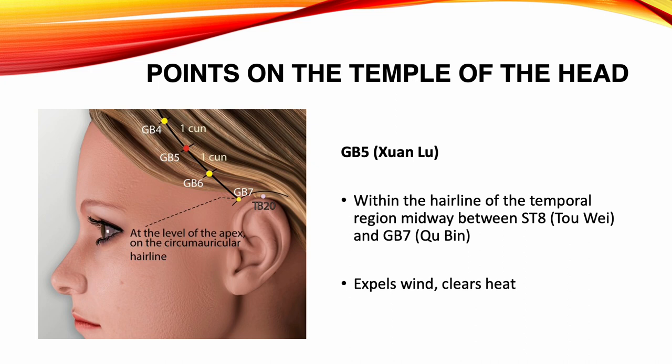Gallbladder 5, Shuan Lu. Location: within the hairline of the temporal region, midway between Stomach 8 and Gallbladder 7. Functions: expels wind, clears heat. Indications: migraine, toothache, swelling of the face, nosebleeds, blurred vision, redness and swelling of the eyes, insomnia.